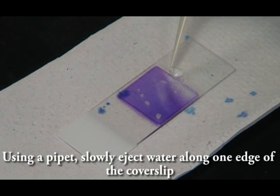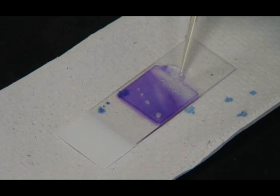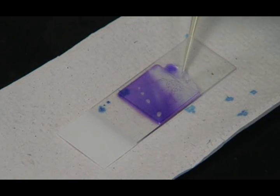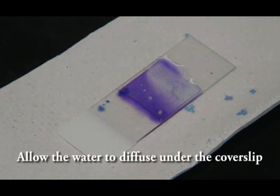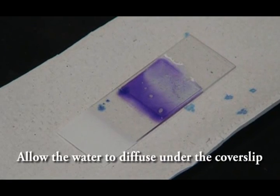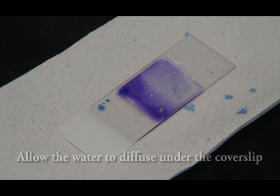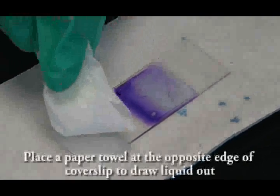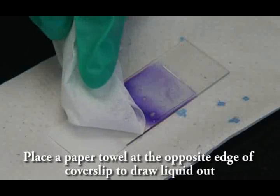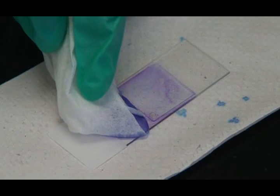If the stain does not readily diffuse under the cover slip, take a few drops of water to one side of the cover slip and then draw the fluid under by touching a dry paper towel or Kim wipe to the opposite side of the cover slip.